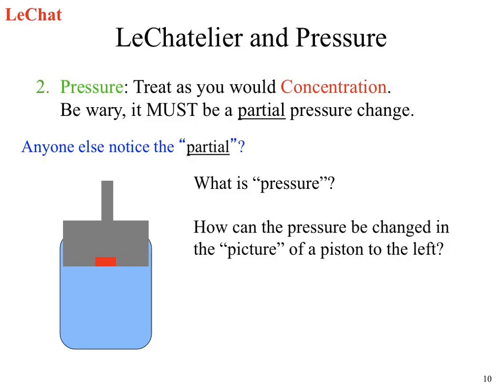How can we change the pressure? If I want to increase the pressure, we can move this piston downwards. What does that do to the space here? Decreases the volume. So our volume decreases. What would that do to the pressure? The pressure increases. That means the partial pressure of each of these species also increases. So if we change the volume, that does change the pressure.